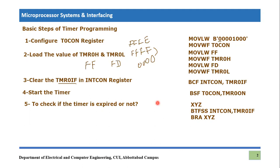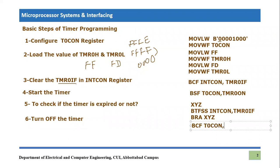Once the timer has expired and produced the required delay, the sixth step is to turn off the timer. Just as we started it using BSF T0CON, TMR0ON, we now clear that bit using: BCF T0CON, TMR0ON. This stops the timer. These are the basic steps you need to follow in every timer programming scenario.